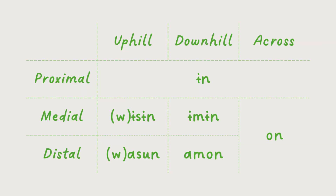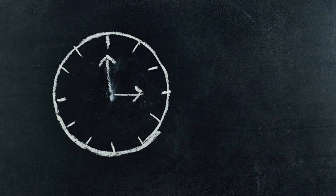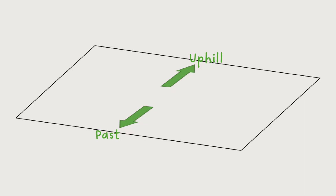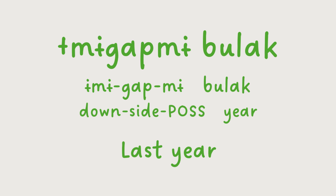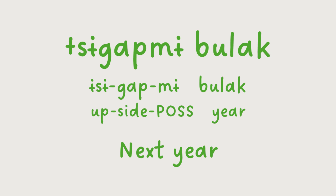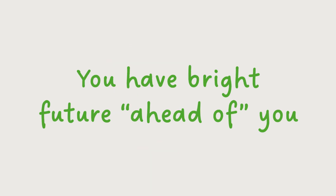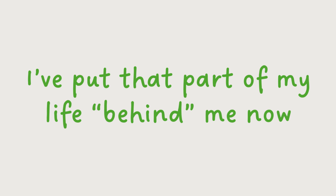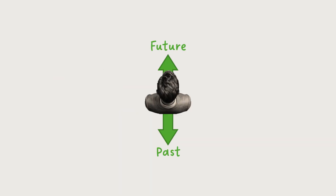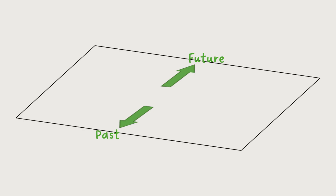And it isn't just when describing space that the Yupno use this contrast — they extend it as well to time. For the Yupno, the past is downhill while the future is uphill. They use phrases like 'the downhill year' to mean last year, and 'the uphill year' to mean next year. This is very similar to how in English we refer to the future as being ahead of us and the past as being behind us, but instead of using English's egocentric system, the Yupno use their uphill-downhill system instead.